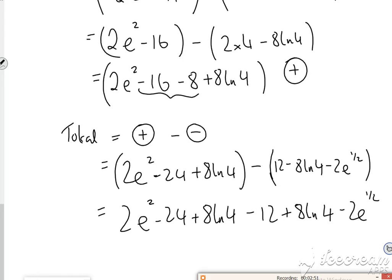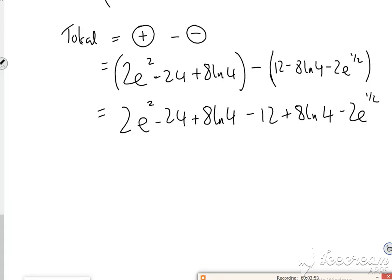So it'll be 2 e squared, I've got minus 24 minus 12 is minus 36, I've got 8 ln 4 plus 8 ln 4 is 16 ln 4, and then I've got minus 2 e to the half. And that is, I think, there.